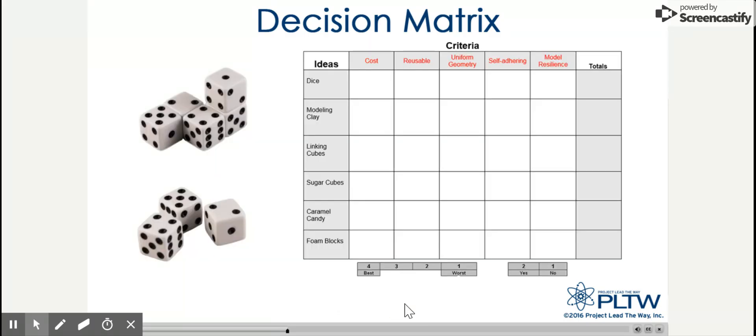Now let's take a look at each of the block options and evaluate them. We'll start with the dice. The dice are expensive, so we'll put a number 1. They're kind of reusable, so we'll put a 2. They're uniform in geometry, that's for sure, so we'll put a 4. Need double-sided tape in order to stick them together, so that's probably a 1. And they are very resilient, so that's a 4.